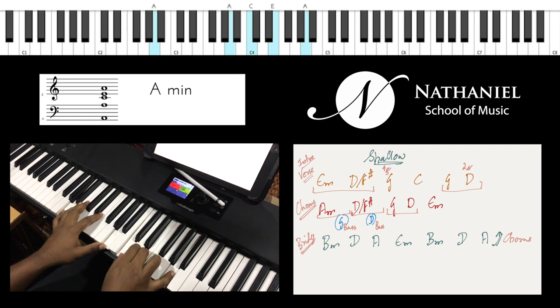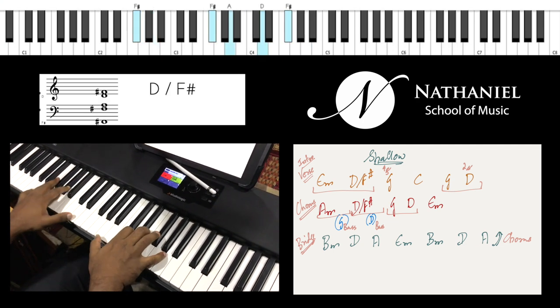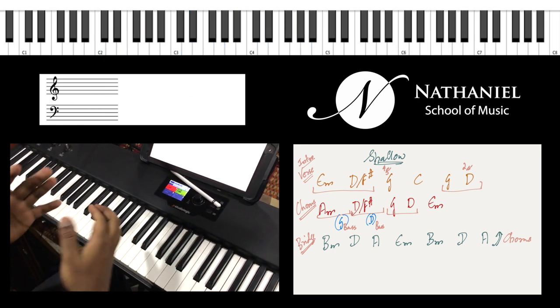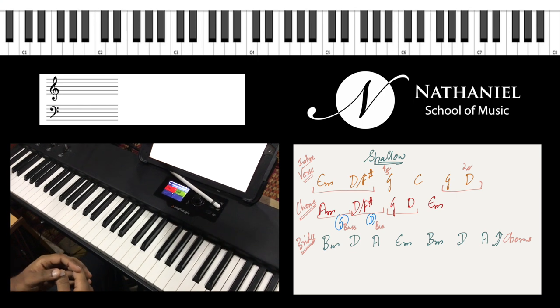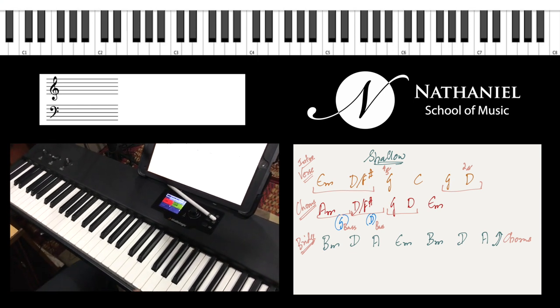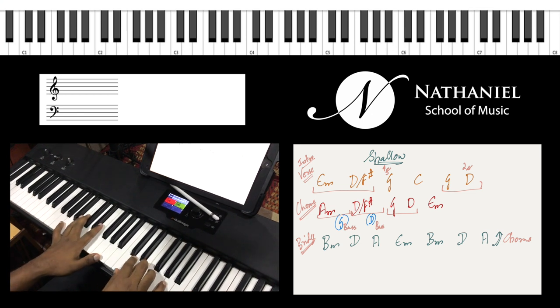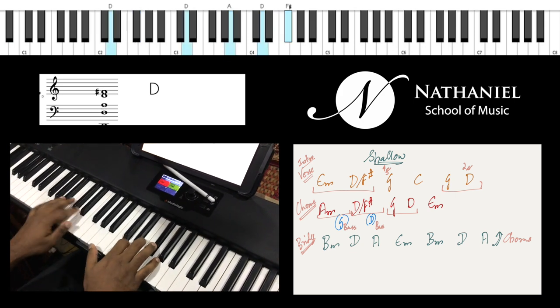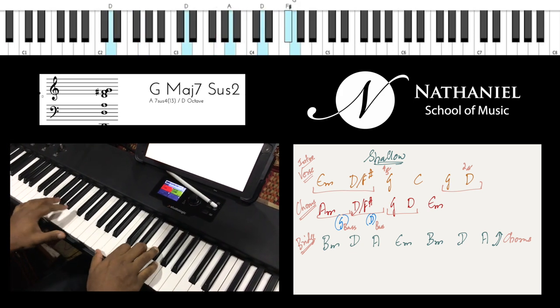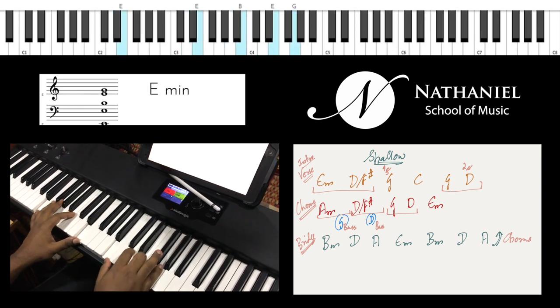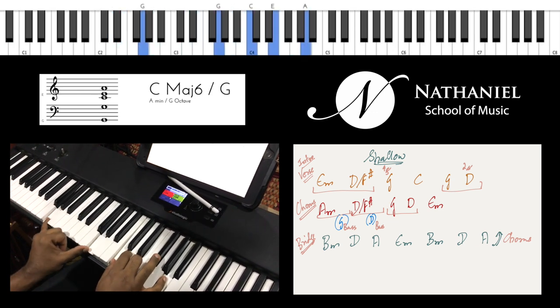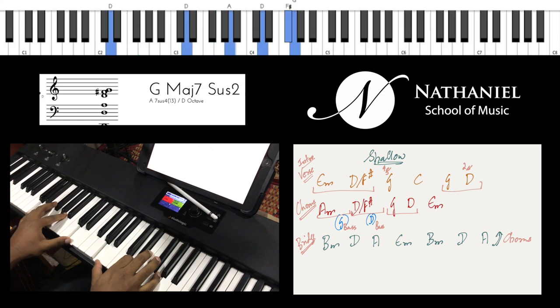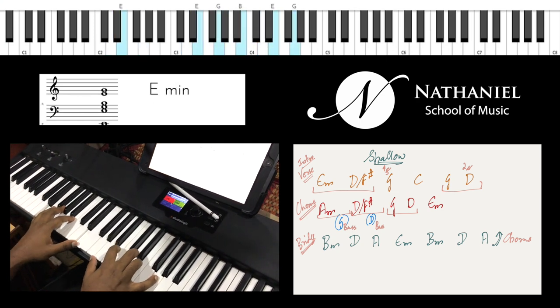A minor, G, D with F sharp, D, normal D. So you do D with F sharp for two counts, D with normal D. Now this doesn't happen throughout the song. I think this happens probably at the second half of the chorus, line 3 and line 4. So at this point. In the shallow, shallow, G. In the shallow, shallow. A minor, A minor with G bass, D with F sharp, D with D. Come from the shallow, now.